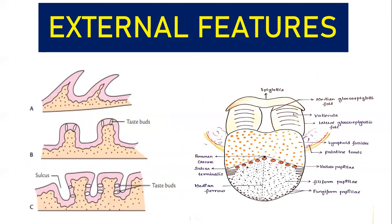Now we will study about the anterior two-thirds of the tongue — that is your oral surface. The oral part has two important structures: your median furrow and then your papillae. The median furrow represents the bilateral origin of the tongue during embryological life, where the tongue forms from two structures present laterally. We will study this in development.